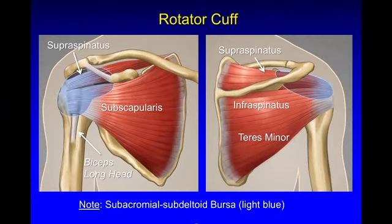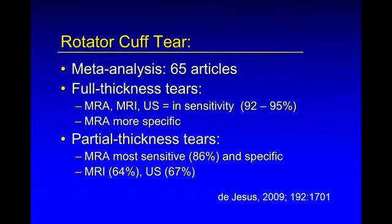First, the rotator cuff normal anatomy. We can see the supraspinatus superiorly, the subscapularis anteriorly, the infraspinatus and teres minor posteriorly. A meta-analysis of 65 articles shows that with full thickness tears, MR arthrography, MRI, and ultrasound are fairly equal in sensitivity at 92-95%, although MR arthrography is more specific. With partial thickness tears, MR arthrography is most sensitive at 86%, followed by ultrasound and MRI at 64%. Both ultrasound and MRI can perform equally in sensitivity and specificity when looking at rotator cuff tears, though we perform less well when looking at partial thickness tears compared to full thickness tears.